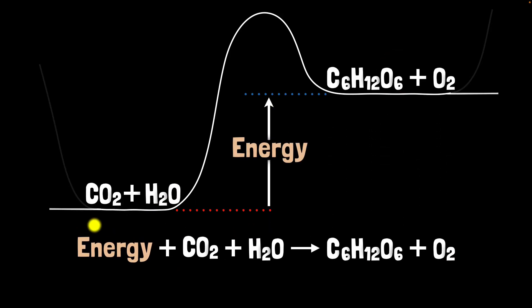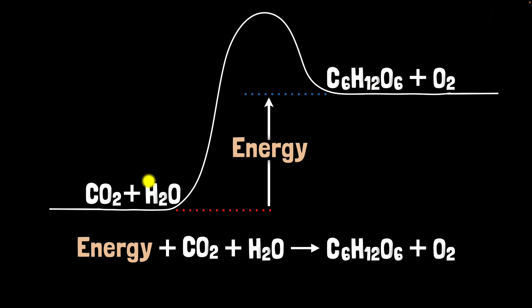In a similar way, it turns out that carbon dioxide and water — this arrangement of atoms — has lower chemical energy. And sugars and oxygen — this arrangement of atoms — has higher chemical energy. So to go from here to here, to rearrange the atoms, you need to supply that difference in energy.